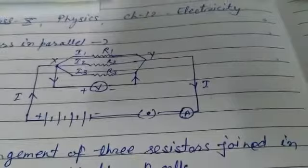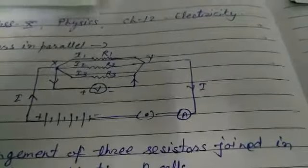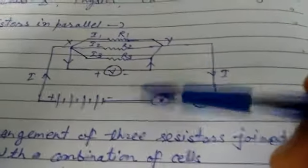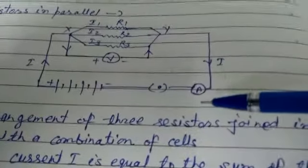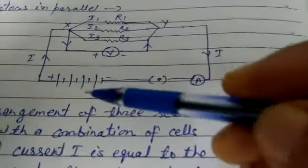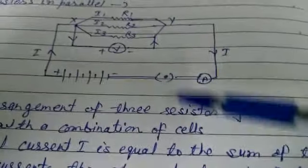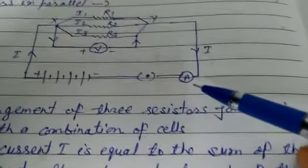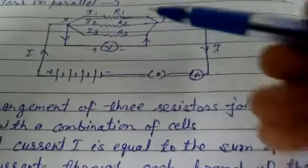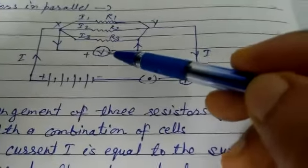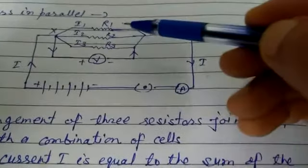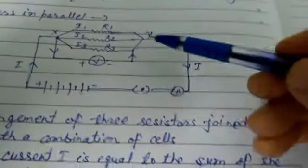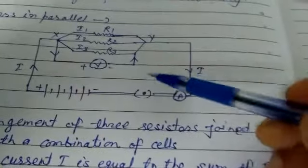Now we are taking resistors in parallel combination. Look at this diagram. This is a parallel combination, three resistors having resistance R1, R2, R3, connected with a battery.